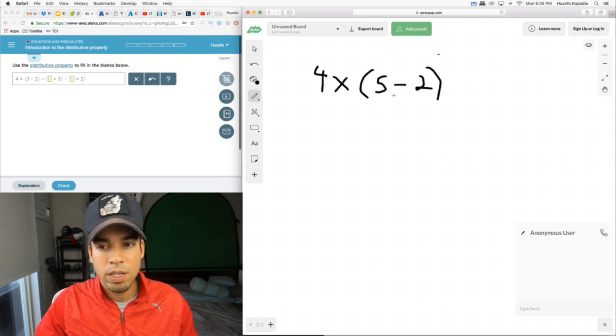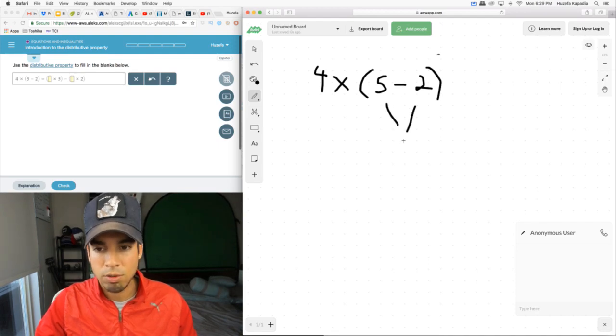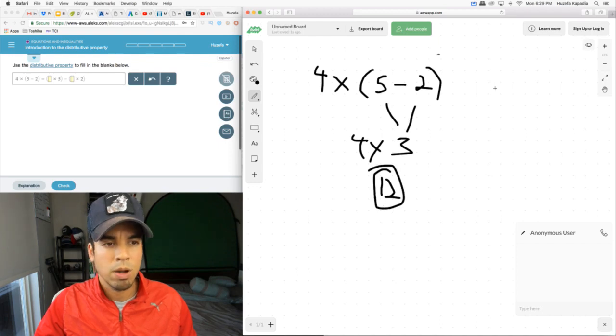We can evaluate this as follows. We can evaluate the 5 minus 2 and get 3, and then multiply the 4 by 3 and we get 12. That's the normal way we would do it.